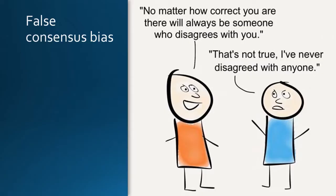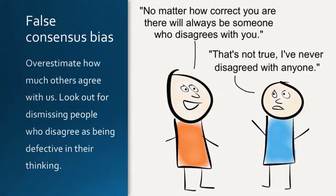The second cognitive bias is false consensus bias. This bias refers to the tendency to overestimate the extent to which other people share our beliefs, attitudes, and values. For example, if someone strongly believes in a particular political candidate, they may assume that most people share their views. False consensus bias can lead to an overestimation of one's own popularity or agreement with others, and can make it difficult to understand different perspectives.